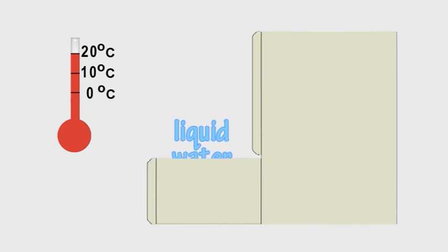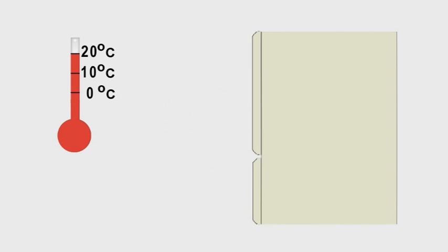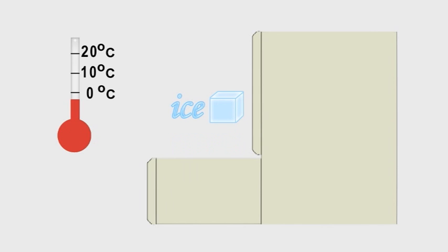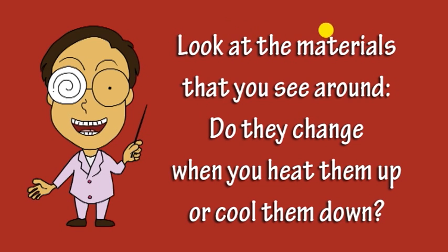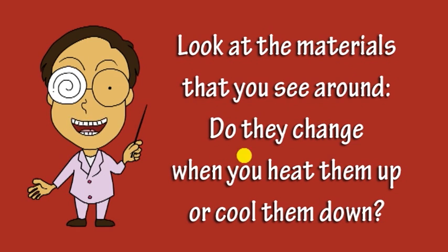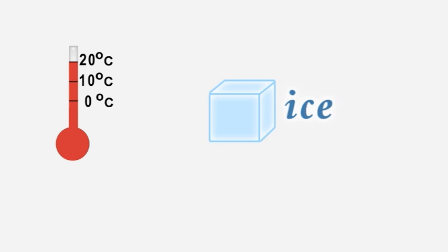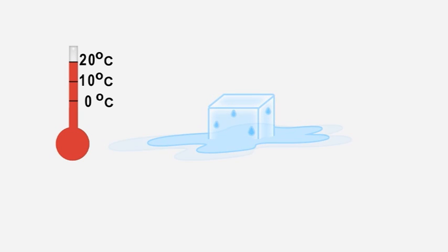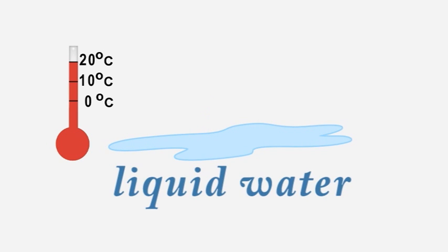Put some water in the freezer till it's very cold, and it will turn into a lump of ice that you can hold. Leave the ice on the shelf and in a while you get a pool of melted water that is very wet.